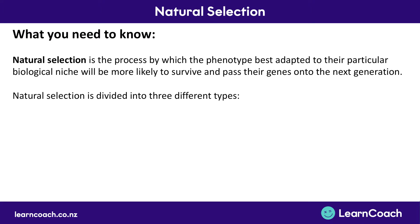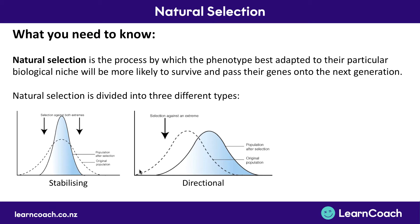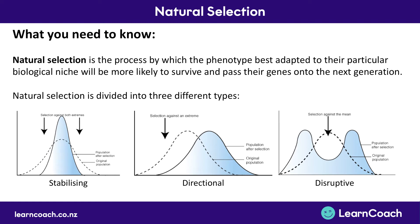Natural selection divides into three types. First, stabilizing selection — selecting against both extreme phenotypes, so the population converges towards the average. Second, directional selection — favouring one extreme phenotype over the other, so the population shifts increasingly in one direction. Third, disruptive selection — selecting for extreme phenotypes but not the average, leading to a bimodal distribution. This provides a framework for future videos, though there are no direct NCEA questions on this topic alone.